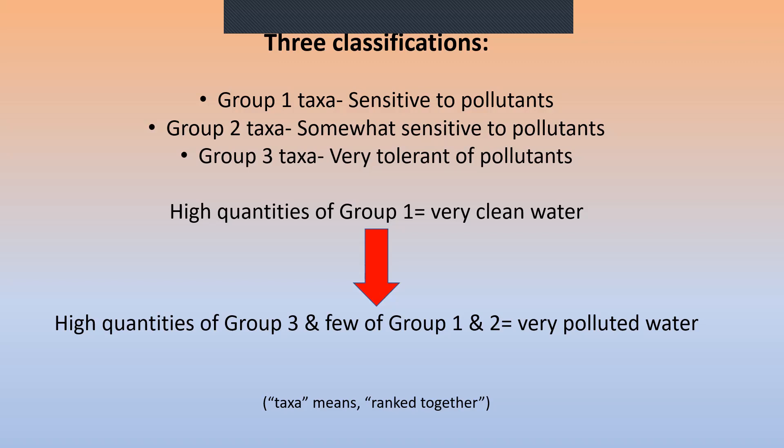How many of each creature are found at any given time gives researchers a pretty good idea of the cleanliness of the water. If a count shows high quantities of group one, the stream or lake has very clean water. High quantities of group three with few of group one and two would indicate polluted — even very polluted — water.